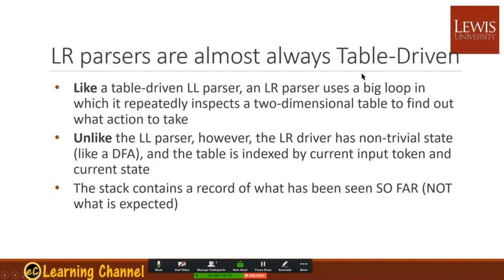LR parsers are almost always table-driven. Like the table-driven LL parser, an LR parser uses a big loop in which it repeatedly inspects a two-dimensional table. Each time we examine the input, a current state, and the input symbol to find out what action needs to be taken. Unlike the LL parser, however, the LR driver has non-trivial state, like a DFA. The table is indexed by current input token and the current state. The state contains the record of what has been parsed so far — it contains the partial parse tree.